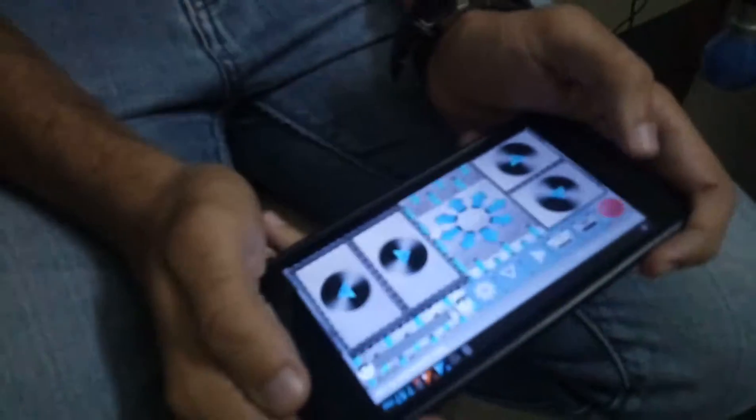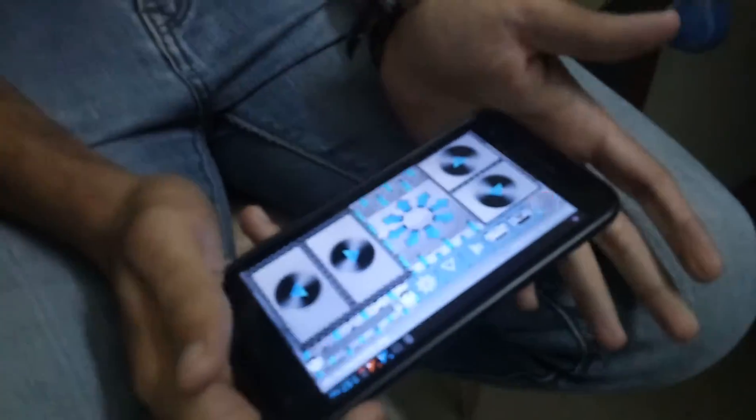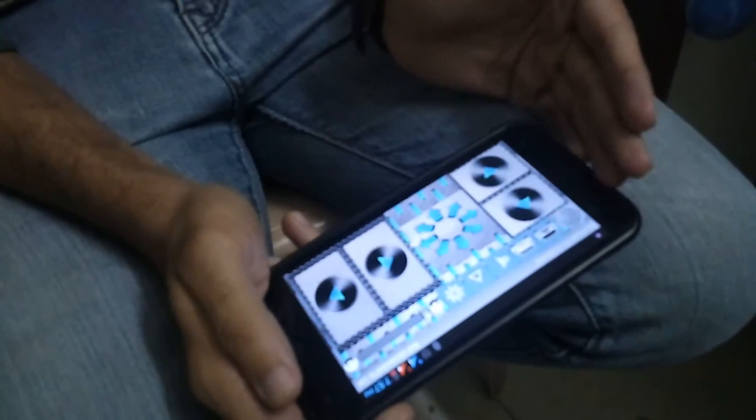Now we just have to download an application from our Android phone. Today, nowadays we all have an Android phone. We just have to download an application called Bluetooth RC controller.